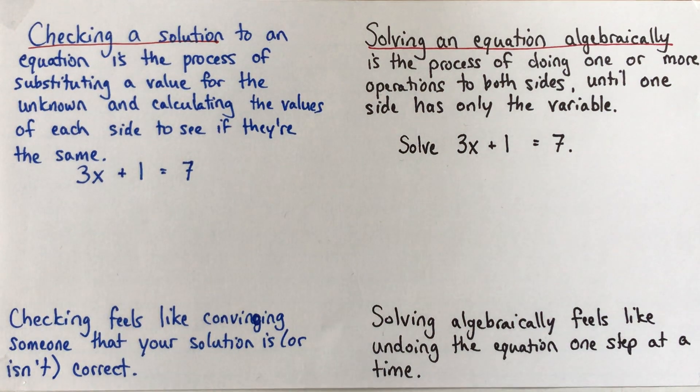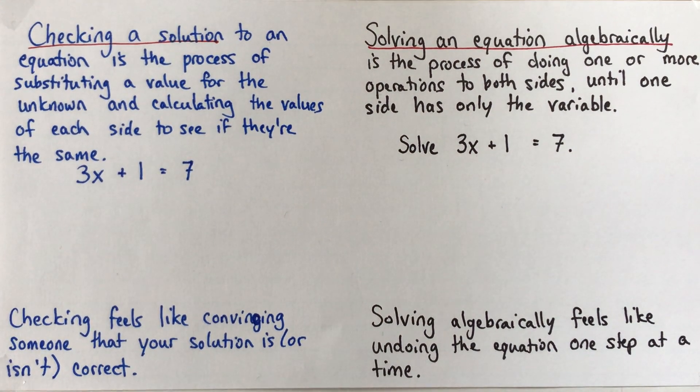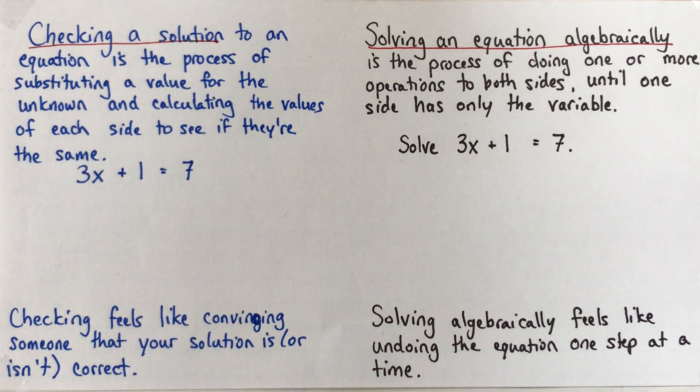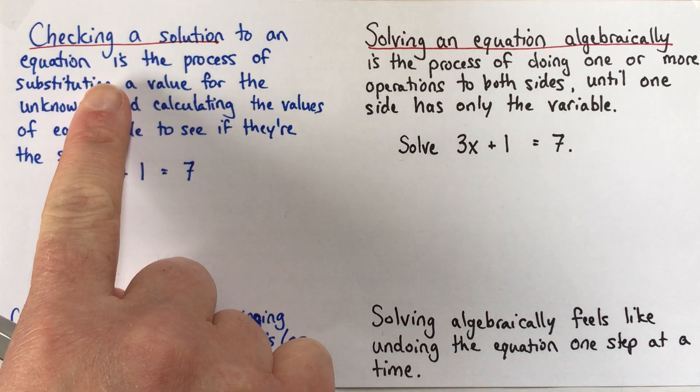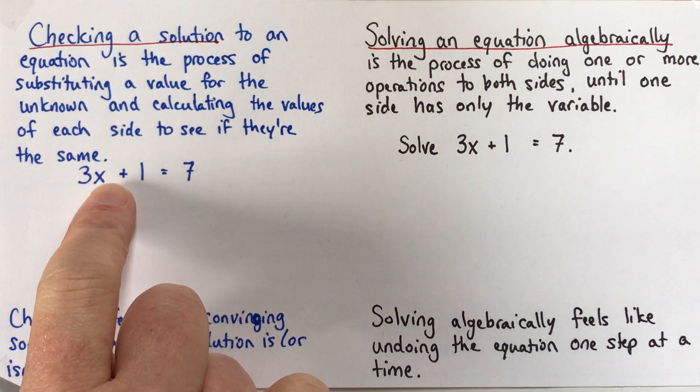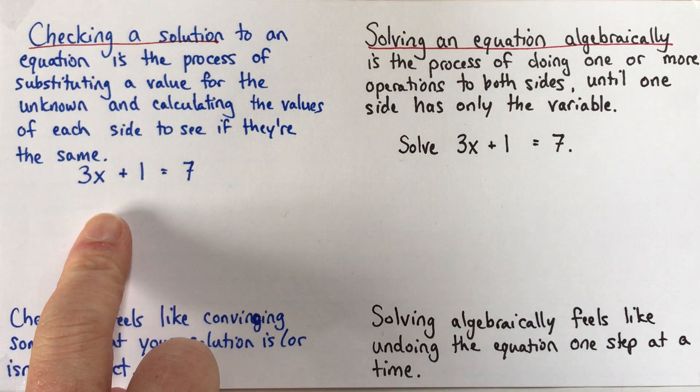Now I'm actually going to start this explanation by showing something that is not solving algebraically. So if you're an impatient type, you can jump ahead until I start talking about the black part here. But first I'm going to talk about checking a solution to an equation, because this is what people sometimes do when they're trying to solve an equation algebraically, so I really wanted to point this out.